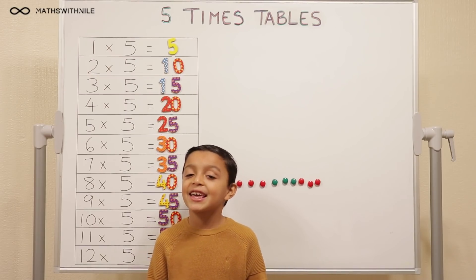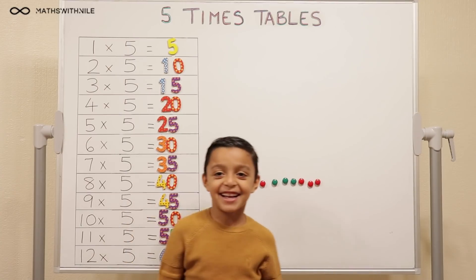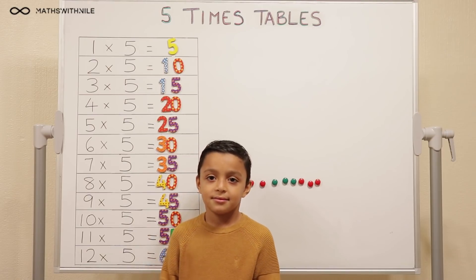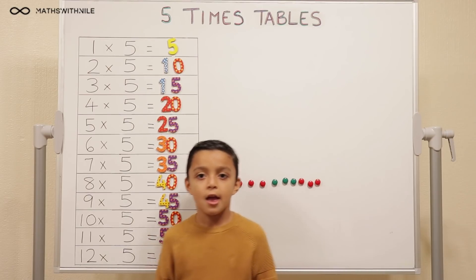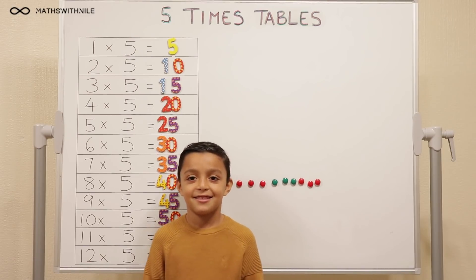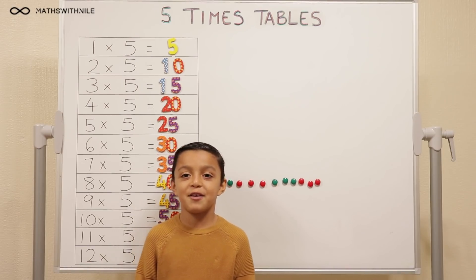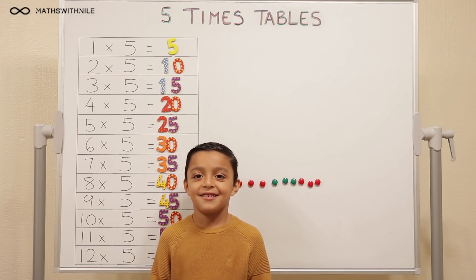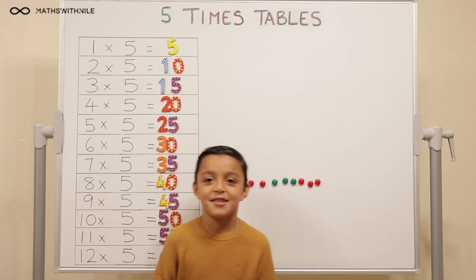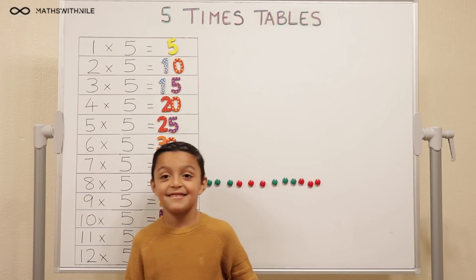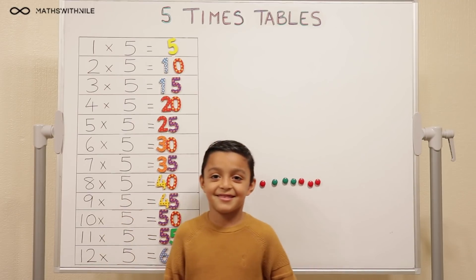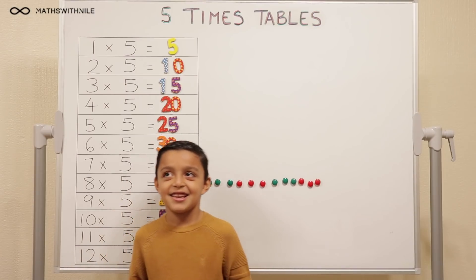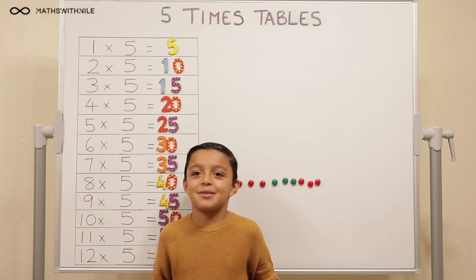Quiz time! You can use your fingers to help you. If you know it, you can say it; if you're not sure, you can check it on your fingers. Three times five? Fifteen. One times five? Five. Six times five? Thirty. Very good. Zero times five? Zero. Eight times five? Forty. Twelve times five? Sixty. Very good.